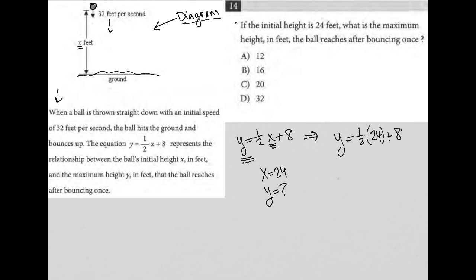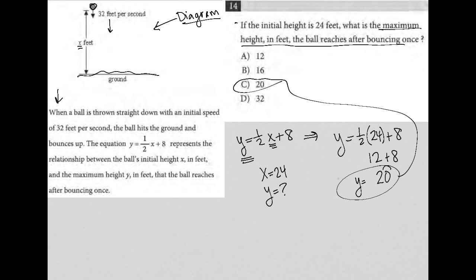One-half of 24 is 12, so I have 12 plus 8, and 12 plus 8 is 20, right? So, we have Y equals 20. 20 represents that maximum height in feet after the bounce, and therefore, our correct answer here is choice C.